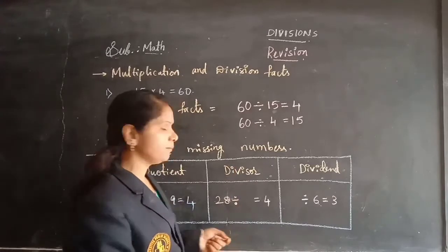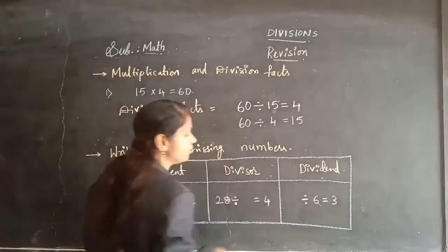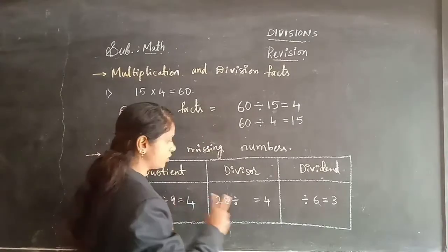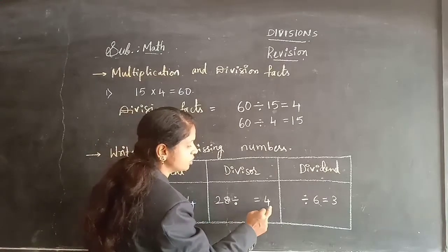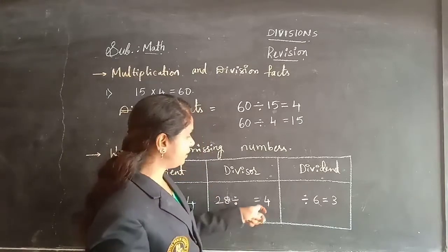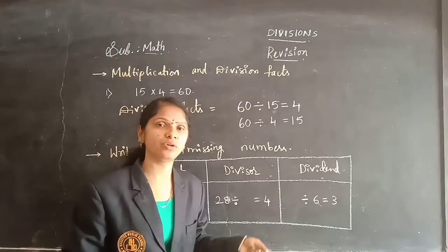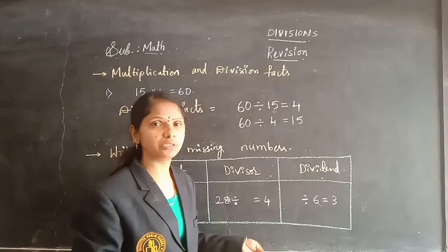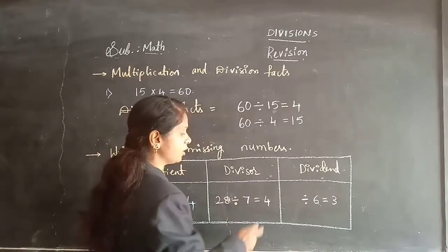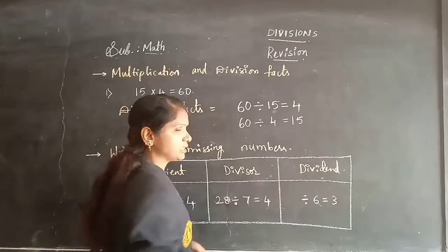Next: 28 is dividing by something and you get 4 as a quotient. We know 4 and we know 28, so with what number, if you multiply 4, do you get 28? In the 4 table: 4×1=4, 4×2=8, 4×3=12, 4×4=16, 4×5=20, 4×6=24, 4×7=28. So the divisor is 7. 4×7=28, or 28 divided by 7 gives 4 as the answer.